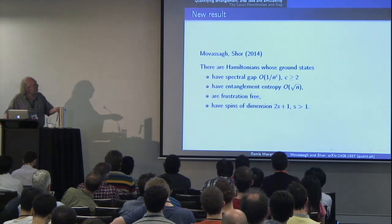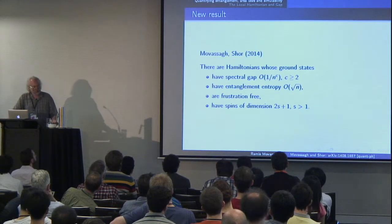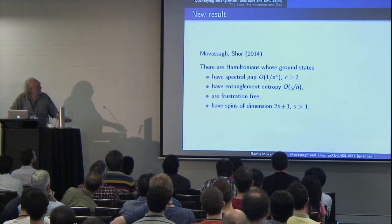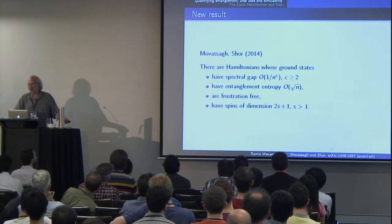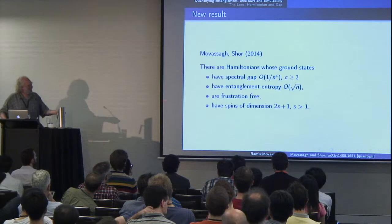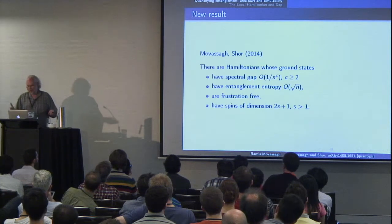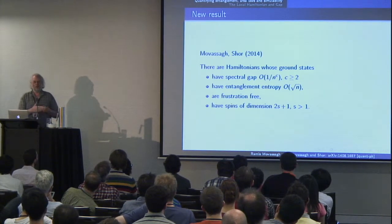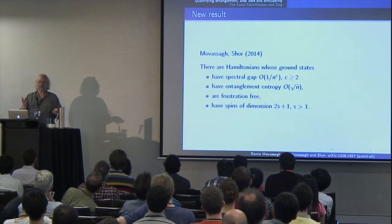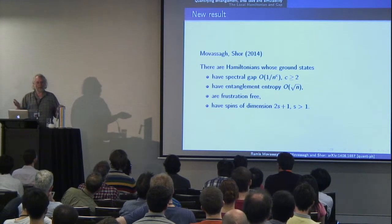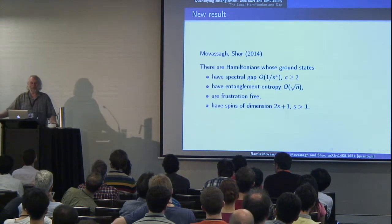Our current results say there are Hamiltonians whose ground states have spectral gap O(1/n^c), have entanglement at O(√n), with spins of dimension 5 instead of 3, and are frustration-free. This breaks the area law by a square root of n factor rather than a log n factor. The log n factor could be explained by saying the system was critical, but the square root of n factor doesn't match any condensed matter theorists' ideas about how spin chains should behave.